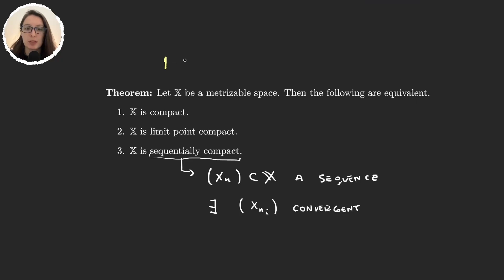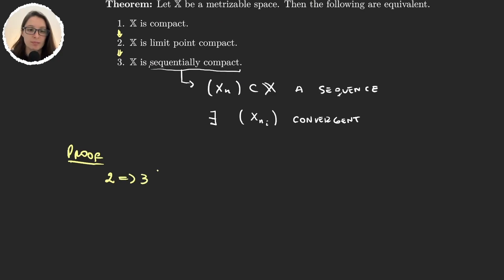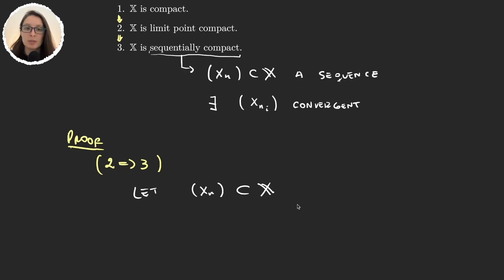To prove this theorem we will prove that 1 implies 2, that 2 implies 3, and that 3 implies 1. The first implication, compact implies limit point compact, we already proved. Now let's see that 2 implies 3: we know our space is limit point compact and we have to prove it's sequentially compact. So we take any sequence x_n in our space and prove it contains a convergent subsequence. We use limit point compactness by letting A be the set of all elements in the sequence.